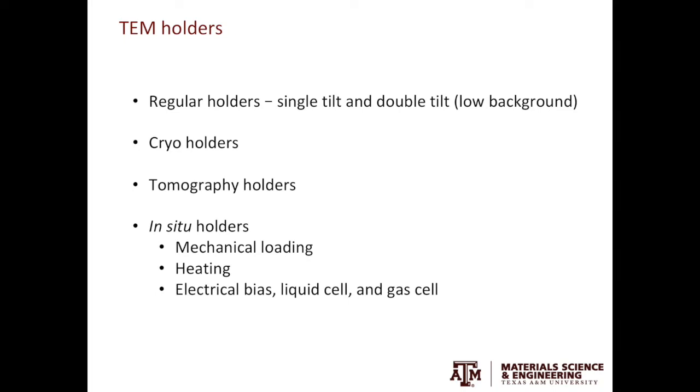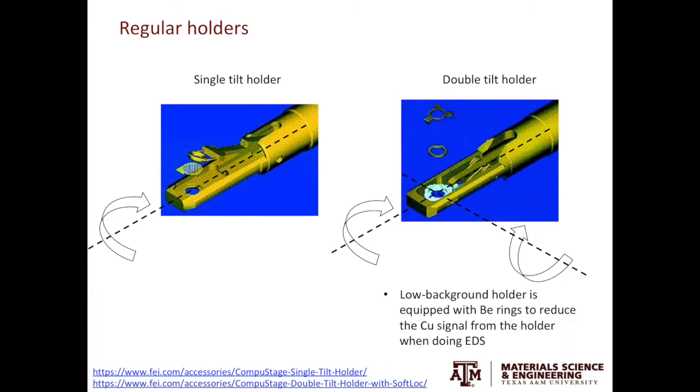Let's look at each type of holder one by one. For the regular holders we have the single tilt holder and the double tilt holder. You have the TEM specimen here and you lower the clamp ring to secure the specimen. You can tilt the specimen along the long axis of the holder, so it's the single tilt holder.